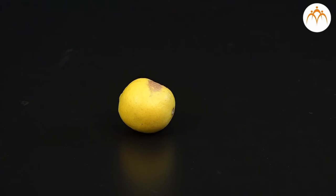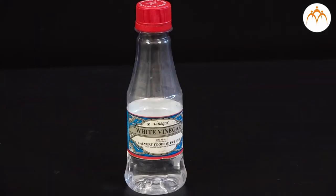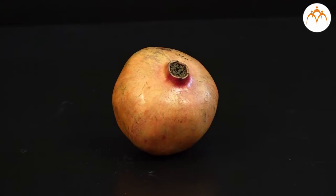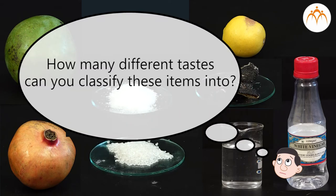Welcome students, here are some food items kept which we consume in our daily life: lemon, tamarind, baking soda, raw mango, vinegar, salt, pomegranate, sugar, and water. Now can you make a list of similar tastes from these? In other words, in how many different tastes can you classify these items?